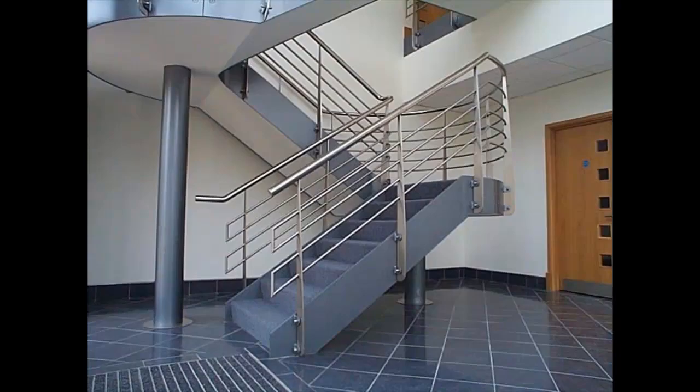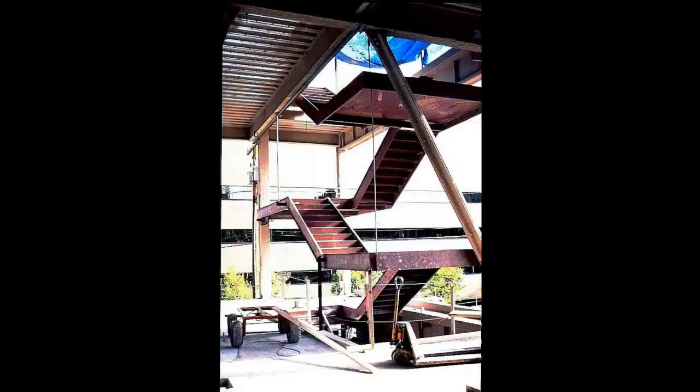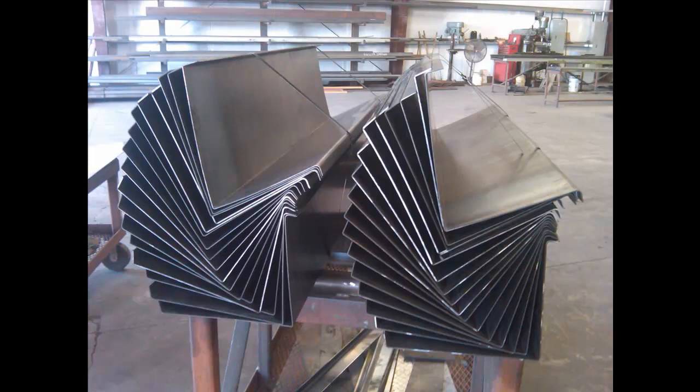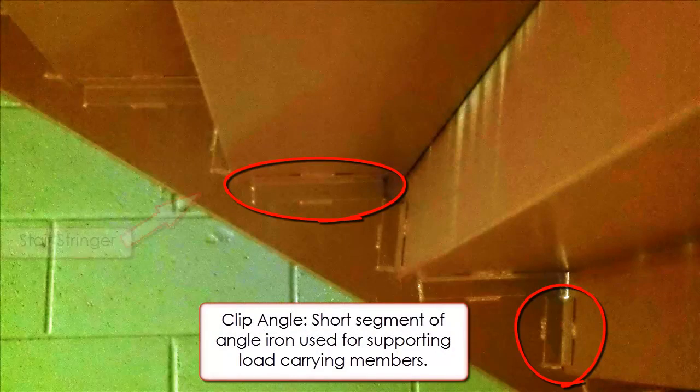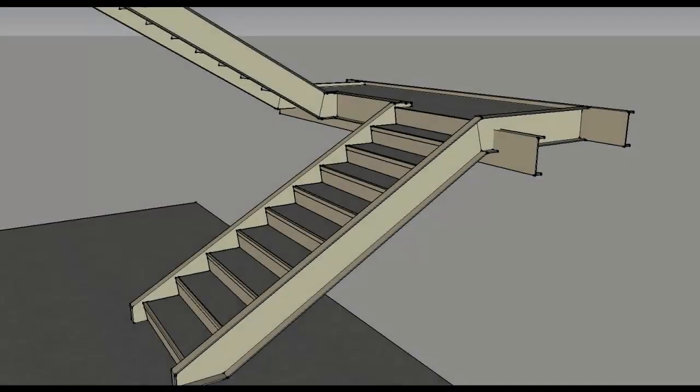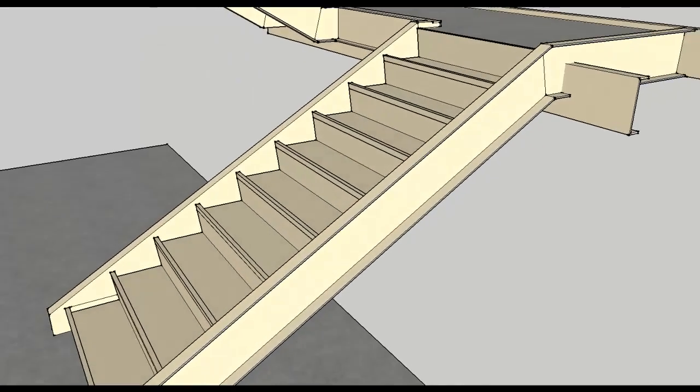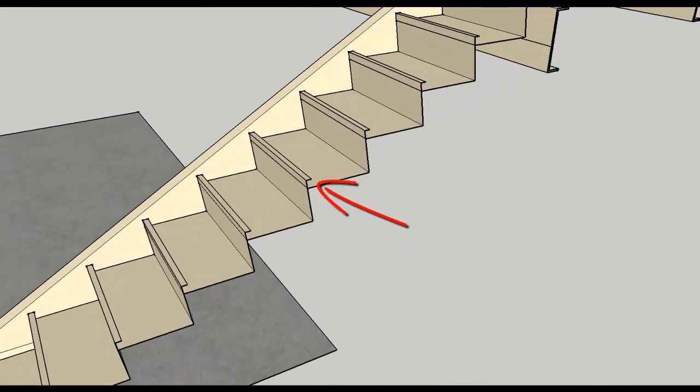Metal stairs come in a range of styles and finishes, the most common of which is a metal pan stair. This system utilizes sheet metal cold-formed to create the treads and risers, which are supported by clip angles attached to the steel stringers. This stair system gets the term pan because the tread is recessed below the top of the riser, creating a trough or pan.